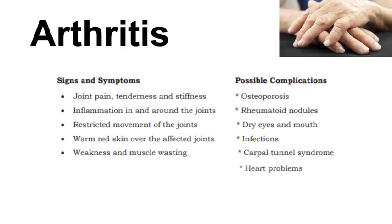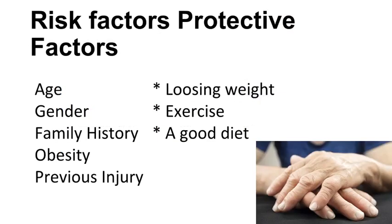Signs and symptoms of arthritis include joint pain, tenderness and stiffness, inflammation in and around the joints, restricted movement of the joints, warm red skin over the affected joints, and weakness and muscle wasting. Possible complications include osteoporosis, rheumatoid nodules, dry eyes and mouth, infections, and carpal tunnel syndrome. Risk factors include age, gender, family history, obesity, and previous injury. Protective factors include losing weight, exercise, and a good diet.